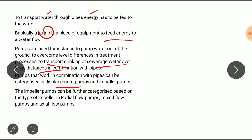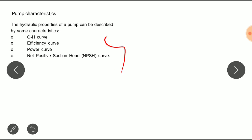The pumps that work in combination with pipes can be categorized in displacement pumps and impeller pumps. The impeller pumps can be further categorized based on the type of impeller in radial flow pumps, mixed flow pumps, and axial flow pumps.